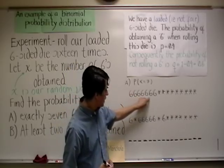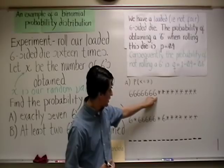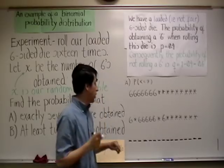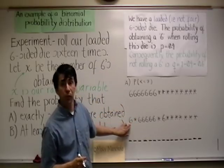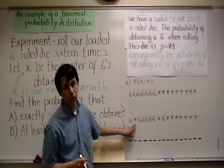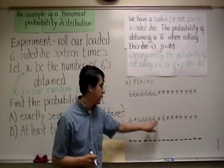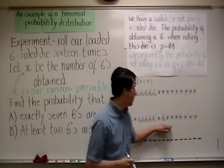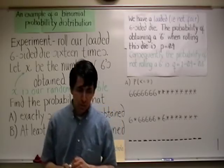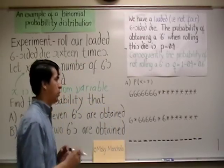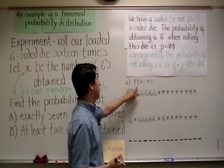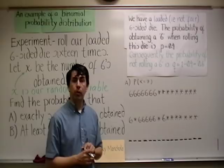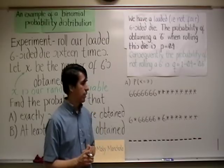The first seven are sixes. The remaining ones, the remaining nine, are not. And here is another case. Maybe the first one was a six. The second was not. The next five were sixes. The one after those, not. And then a six. And then the remaining, not sixes. So, what do we do to find the probability that x equals seven? We'll have to find the probabilities of all these outcomes. And then we would have to add them to get the result.